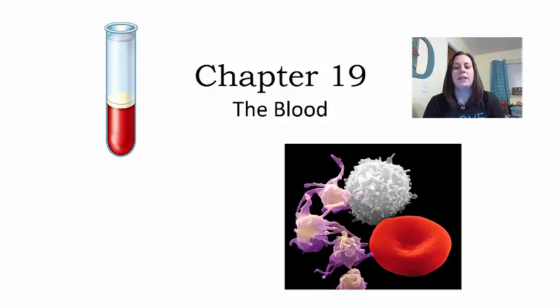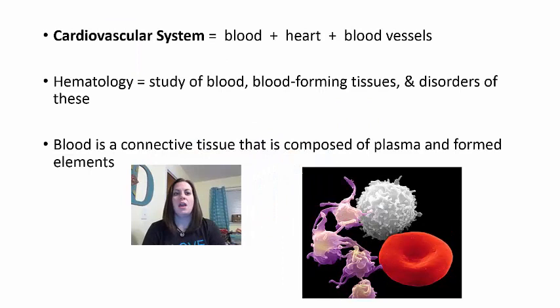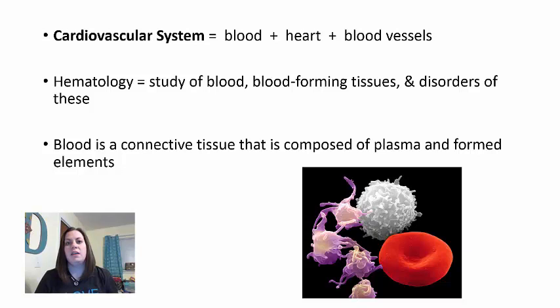We're going to move into chapter 19, where we're going to start looking at the different components of the cardiovascular system, starting with blood. The cardiovascular system is a combination of the blood, the heart—which is the pump—and the blood vessels the blood travels through. We'll talk about blood in chapter 19, the heart in chapter 20, and the blood vessels in chapter 21.